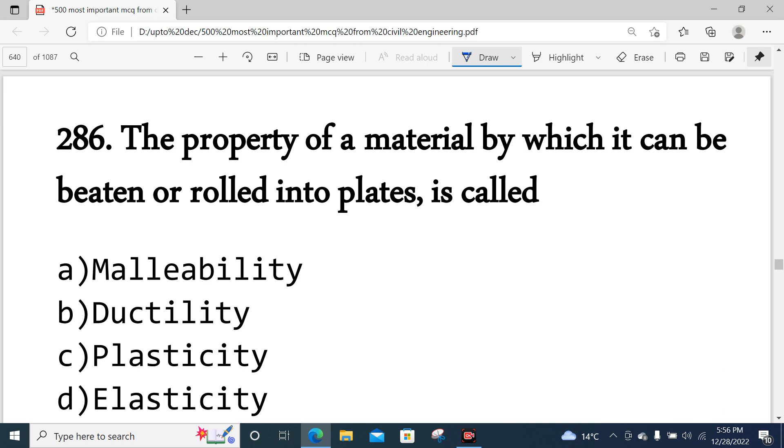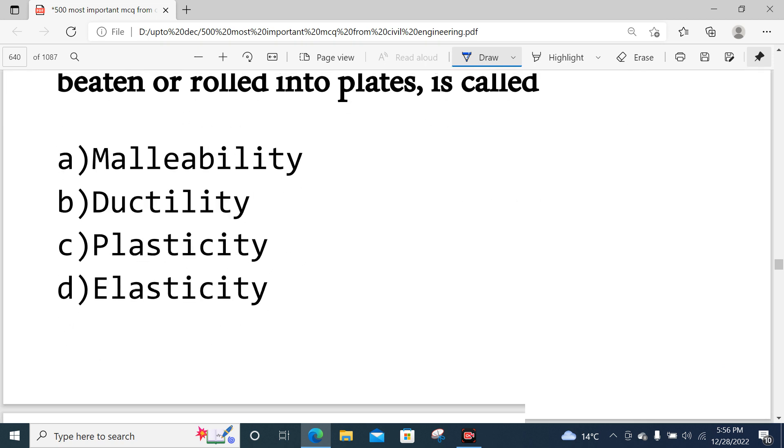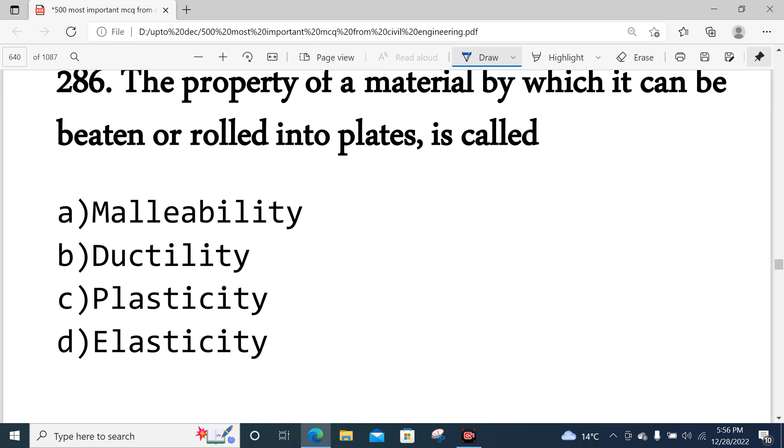The property of a material by which it can be beaten or rolled into plates is malleability. Malleability makes the material able to become a plate.